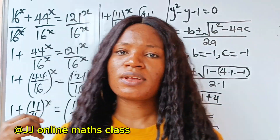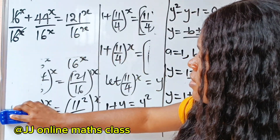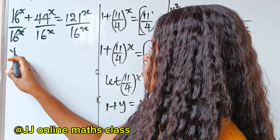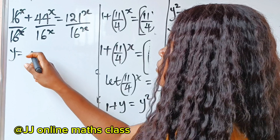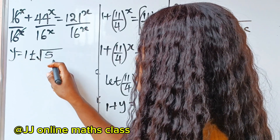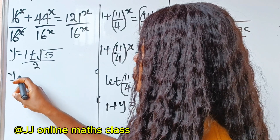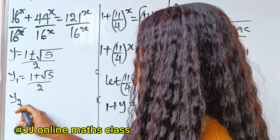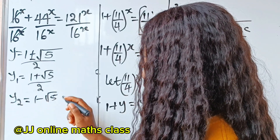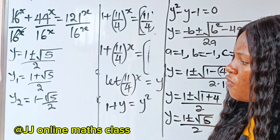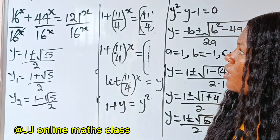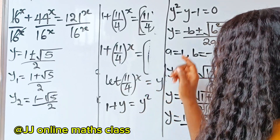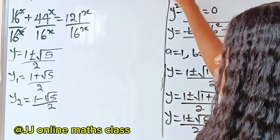Okay, now we are going to use the other side of the board. So these are the two values of y: the first is y equals 1 plus square root of 5, divided by 2, and the second is y equals 1 minus square root of 5, divided by 2. Remember that we said 11 over 4, to the power of x, is equal to y.